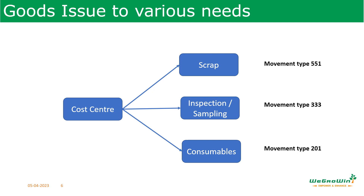Goods issue to different purposes will have different movement types. For example, to issue materials for scrap, movement type 551 will be used. To issue materials for sampling from unrestricted stock, movement type 333 will be used. To issue material to cost centers for specific usage, movement type 201 will be used. Different movement types are used for different needs, so it is important to understand the various movement types available.